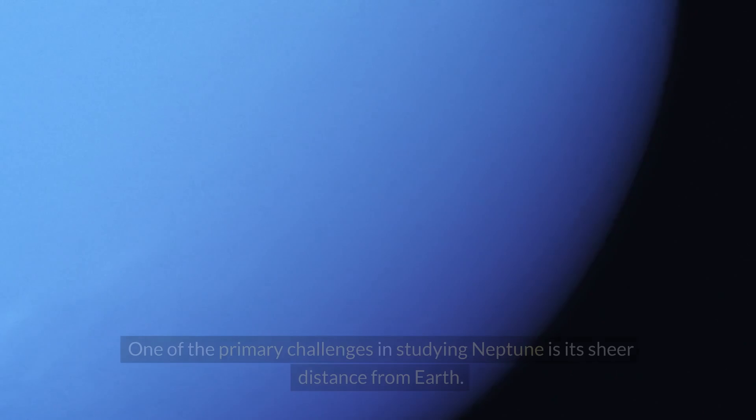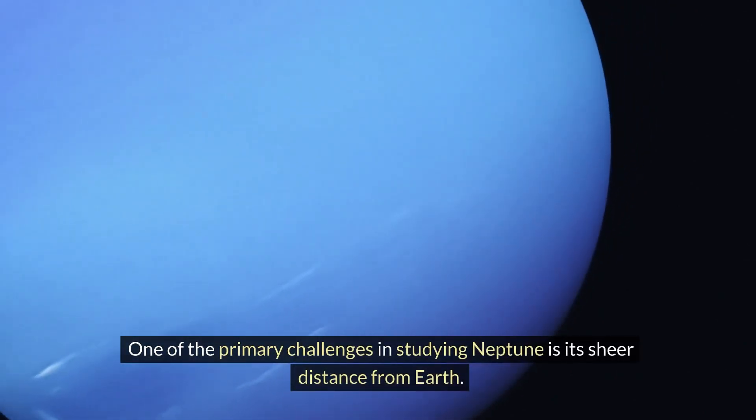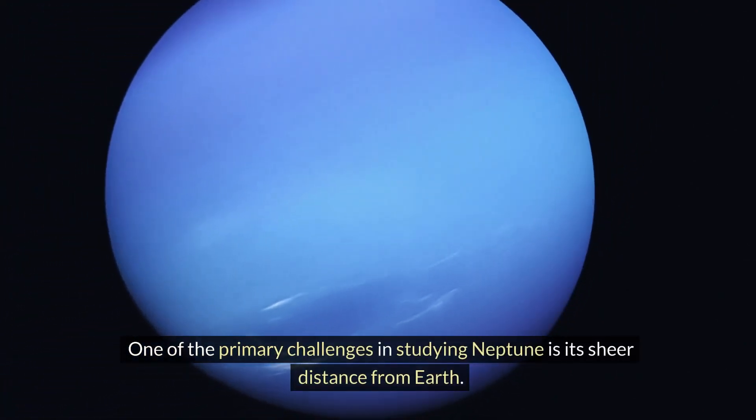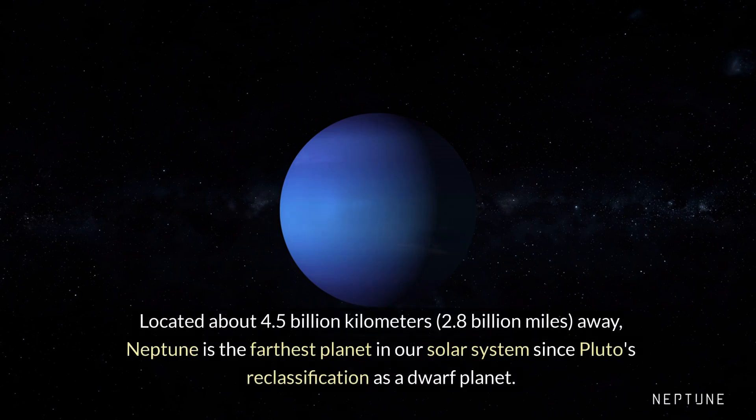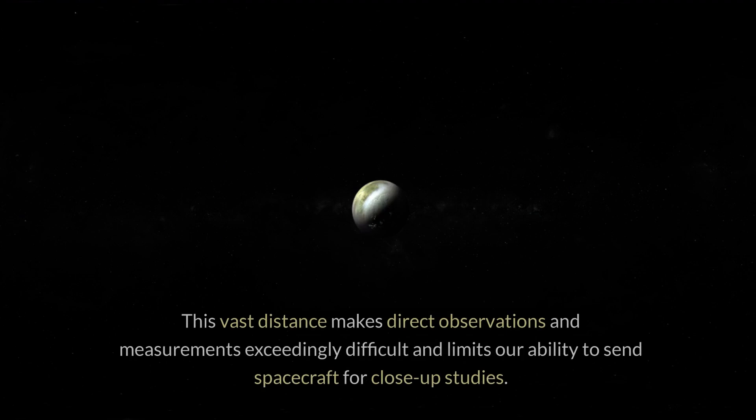Distance from Earth: One of the primary challenges in studying Neptune is its sheer distance from Earth. Located about 4.5 billion kilometers (2.8 billion miles) away, Neptune is the farthest planet in our solar system since Pluto's reclassification as a dwarf planet.